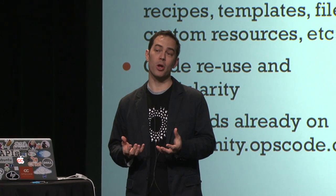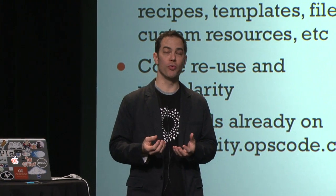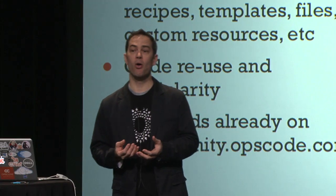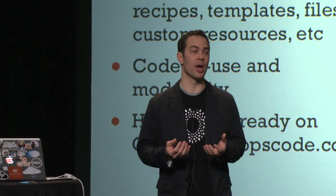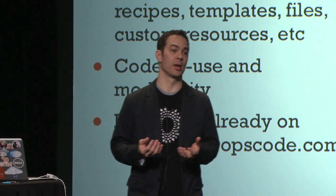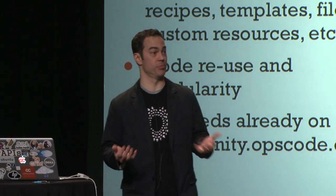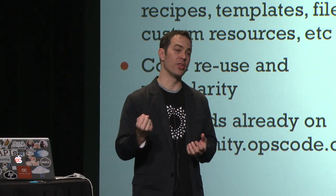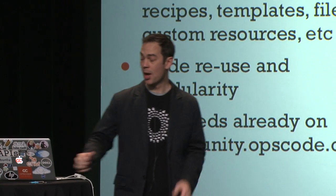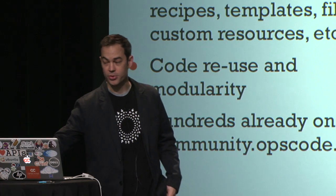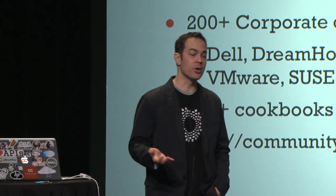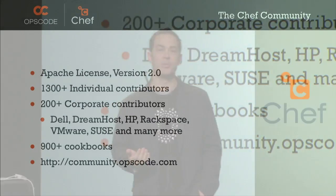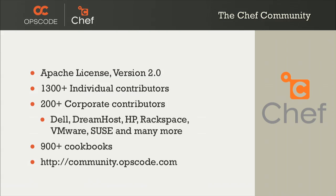The point of a cookbook is it promotes code reuse and modularity. There are over 900 cookbooks available on the OpsCode community site, where other people writing infrastructure just like you are sharing these libraries with other users. I mention our community because it's very important to OpsCode and to our Chef community.